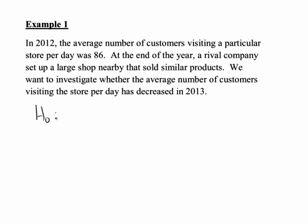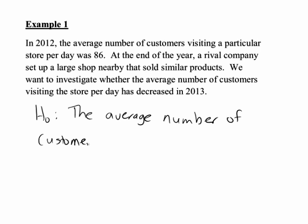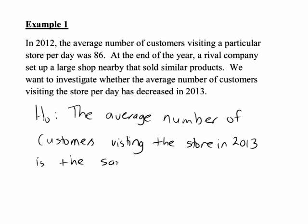Let's think about what our hypotheses would be, first in words and then in symbols. The null hypothesis — written H0 — would say there had been no change in the average number of customers visiting the store each year. In other words, the average number of customers visiting the store in 2013 is the same as in 2012. That is our hypothesis of no change.